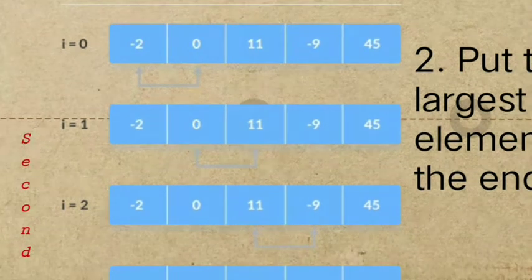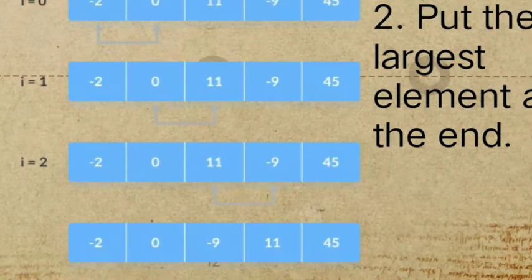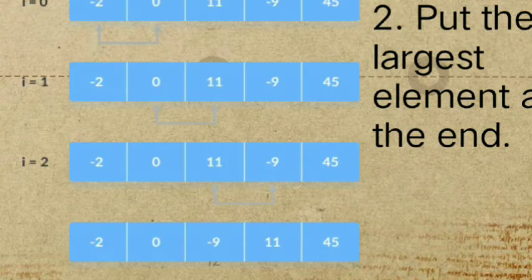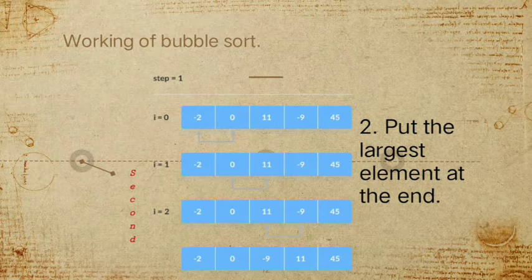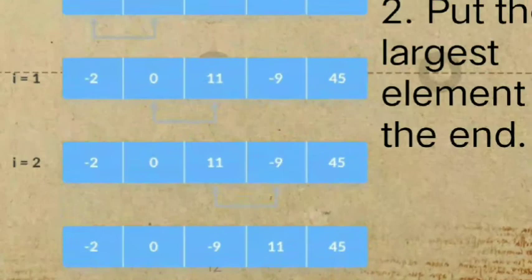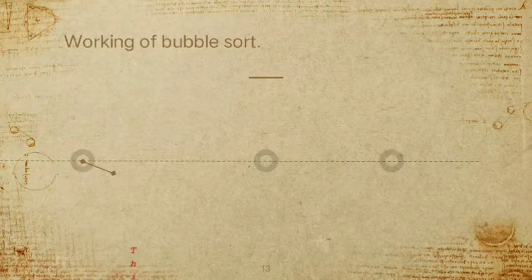The next element is 0 and 11 — is 0 greater than 11? That is false, so we proceed again. Since 11 is greater than negative 9, 11 will be swapped with negative 9. In each iteration, comparison takes place up to the last unsorted element. The two largest elements are now placed at the end.